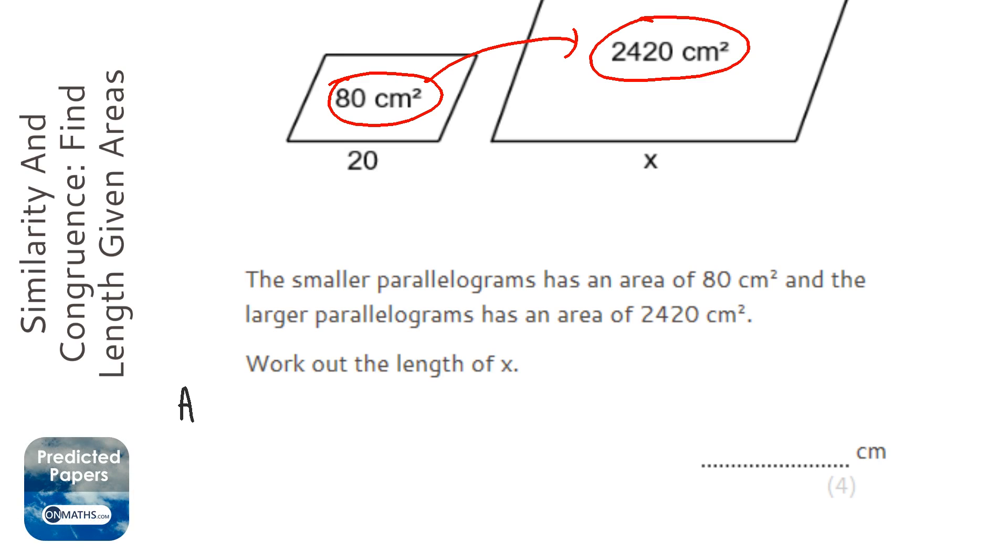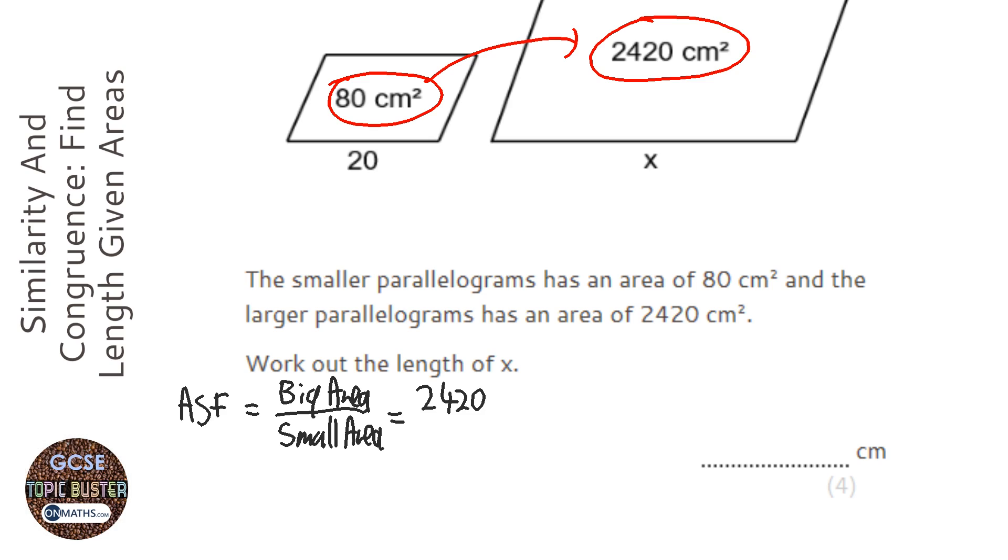We need to work out what the area scale factor is. An area scale factor is big area over small area, which is going to be 2,420 over 80. So I'll get my calculator out, 2,420 over 80. Probably could have done this without a calculator, 30.25.